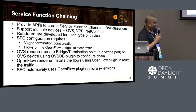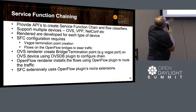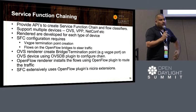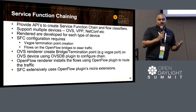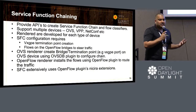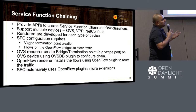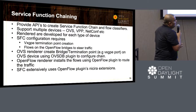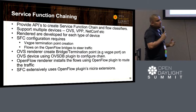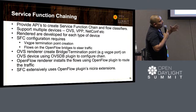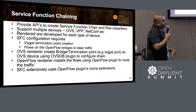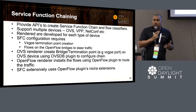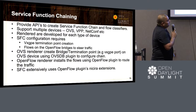Service function chaining is pretty much the same use case, but used for a different purpose. SFC wrote renderers for different kinds of devices, and those renderers use these different protocols to configure bridges. SFC requires different configuration — they create a VXGPE port for SFC purposes and install flows that heavily use NSH extensions. They don't use plain OpenFlow constructs; they heavily use the NSH extension. That's where they use the OpenFlow plugin extensively, because the plugin has an extension framework where you can add your own extensions and use them.